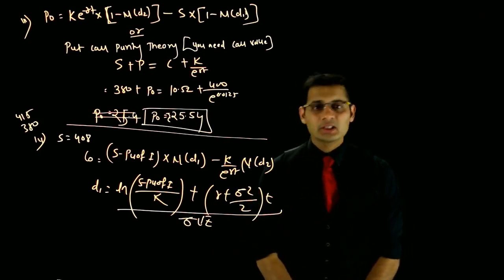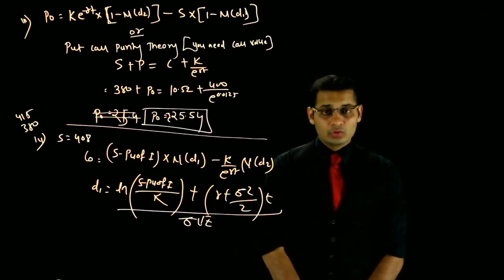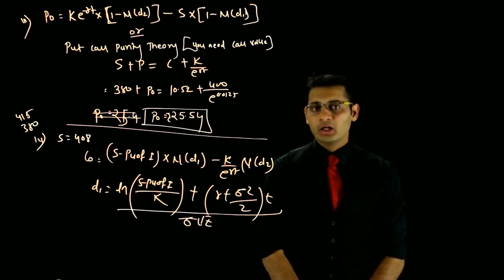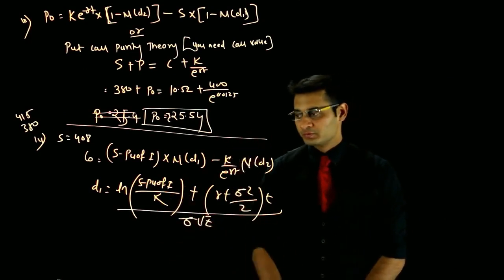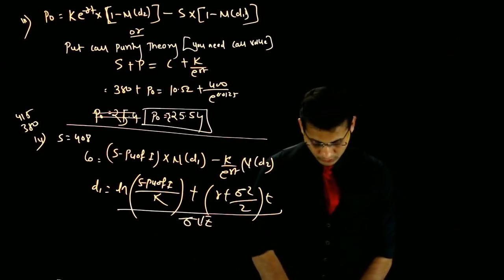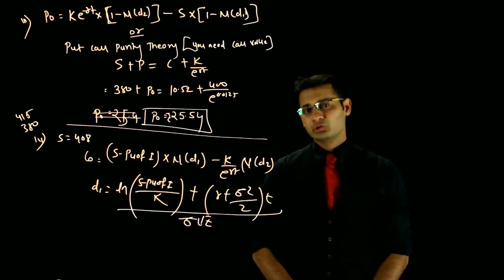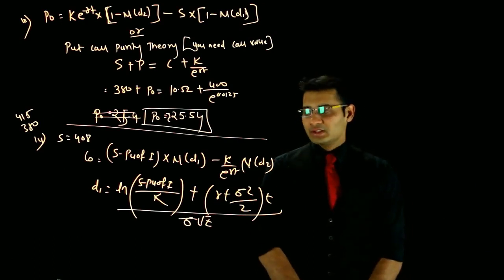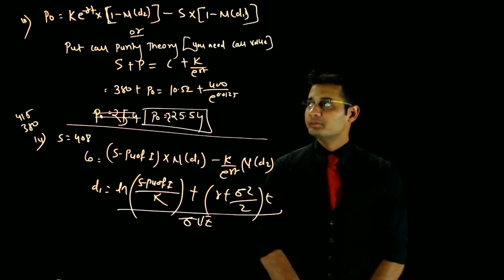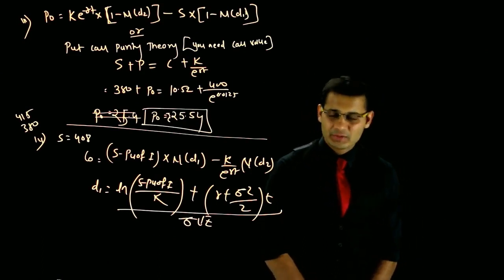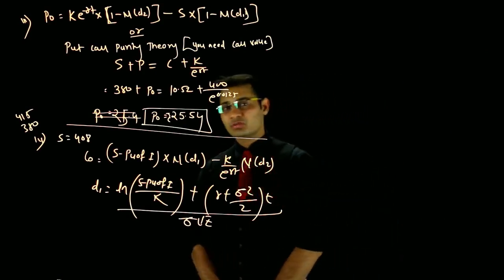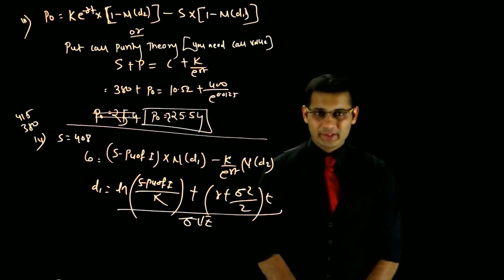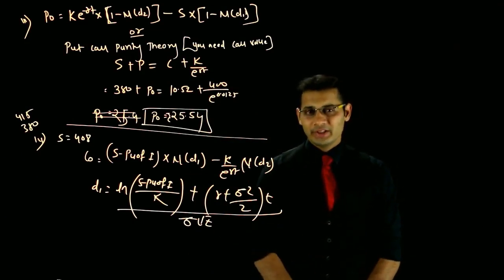Answer नहीं आता तो contact करें। यह end है इस question का — काफी अच्छा jumbo question है Black-Scholes model के सारे types cover करने के लिए। आगे swaps, forward rate agreements, caps, collars, floors जैसे concepts cover करेंगे और chapter end होगा। Note down करो और next lecture में मिलते हैं।